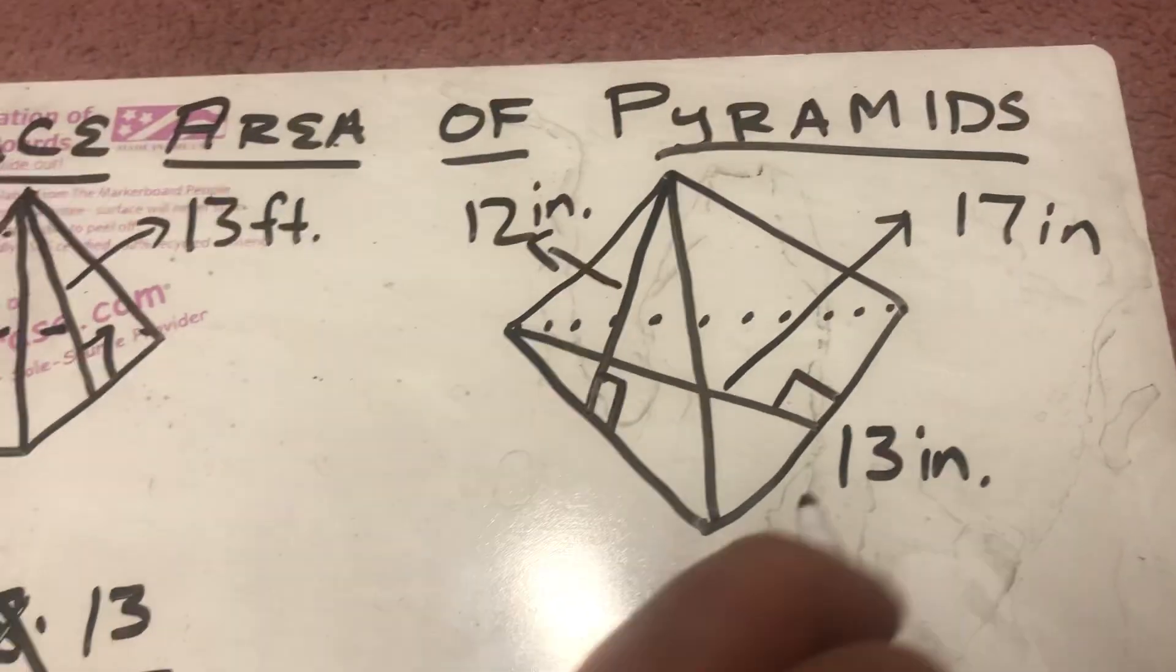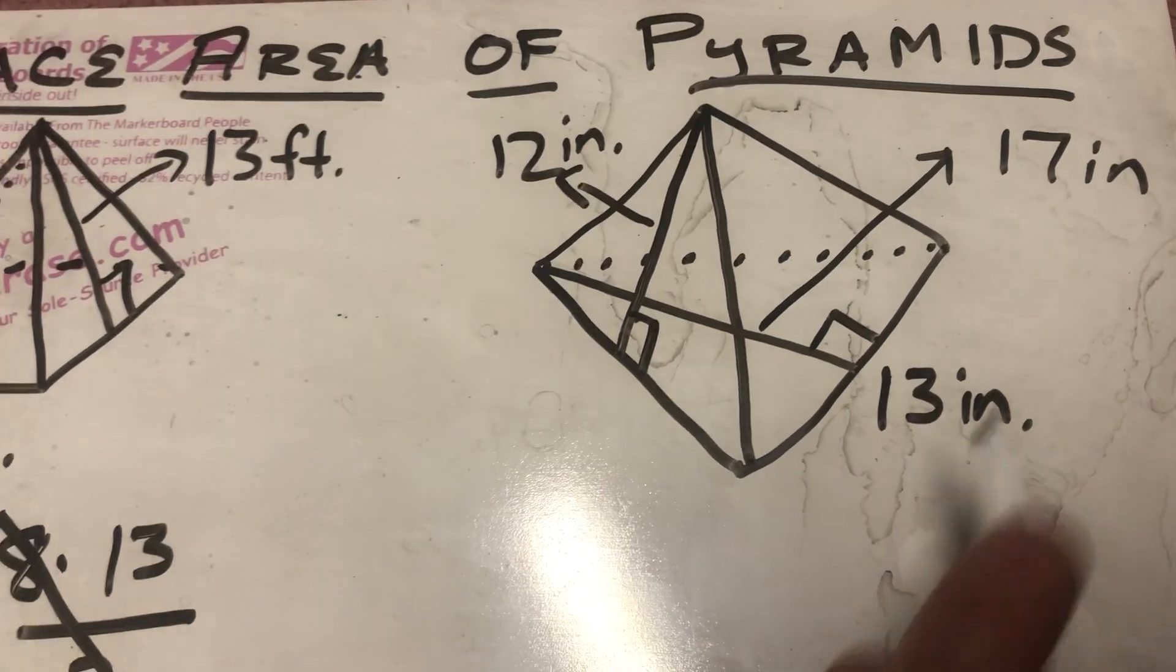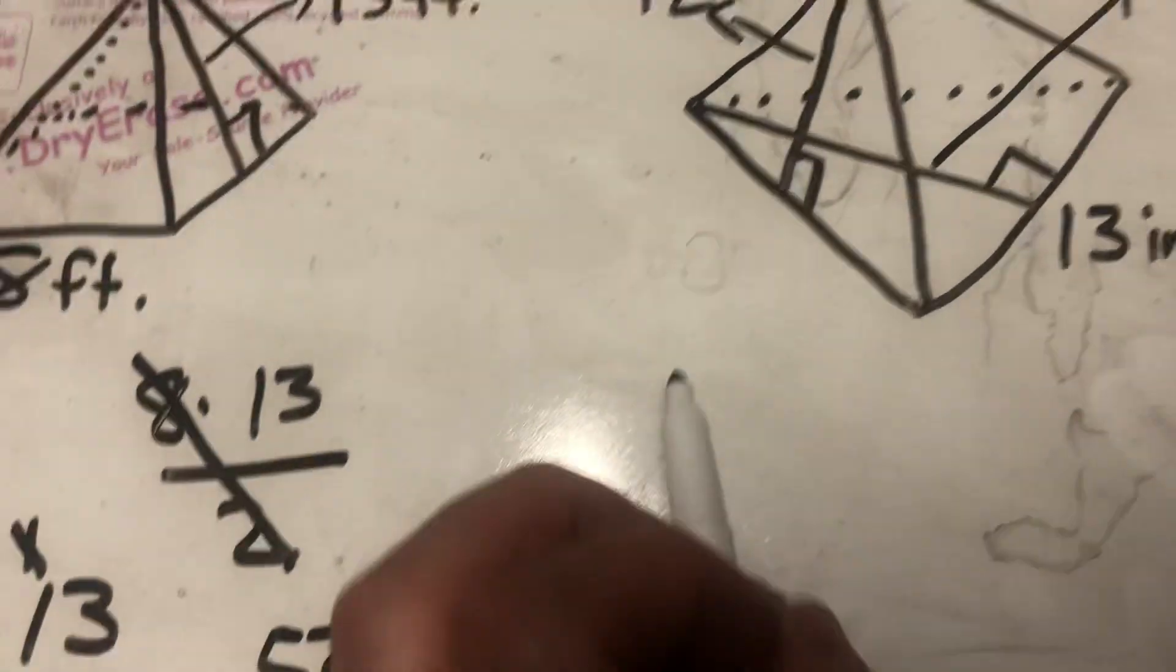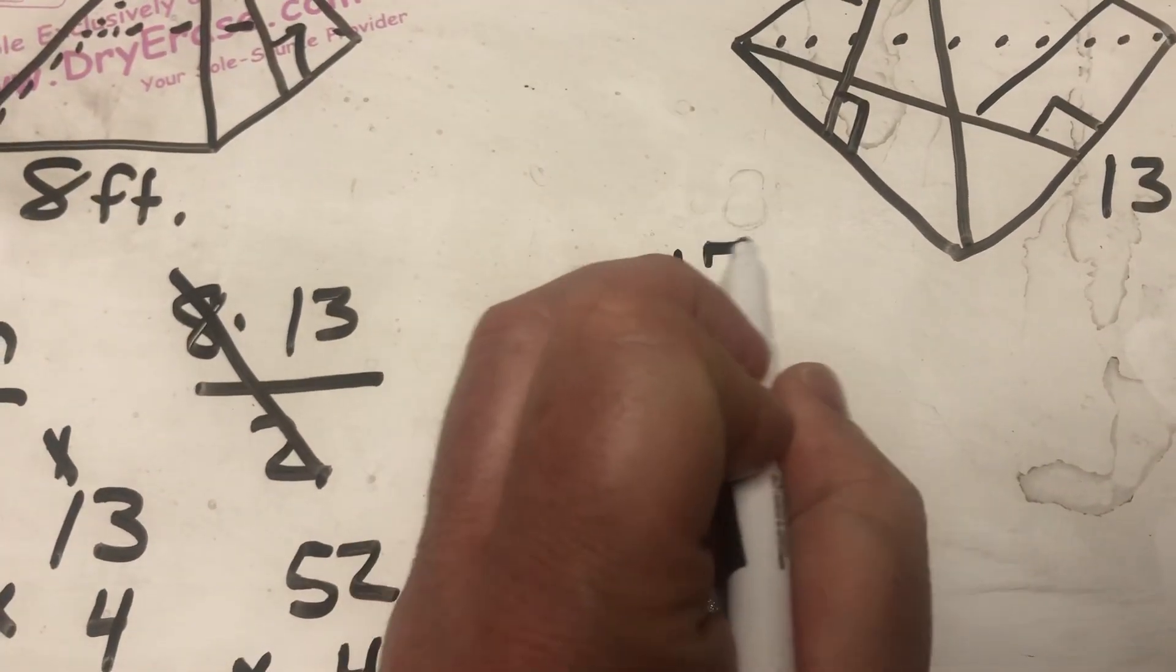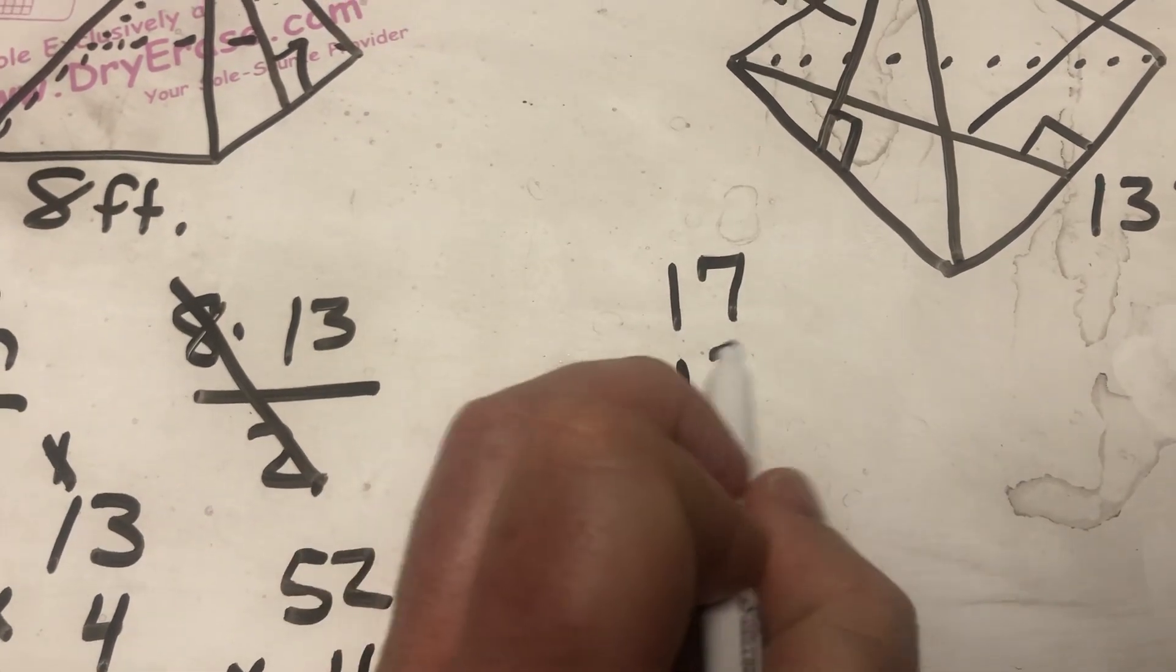So, it would be 13 times 17 for base times height, and then that divided by 2. So, I've got to come over here. 17 times 13.